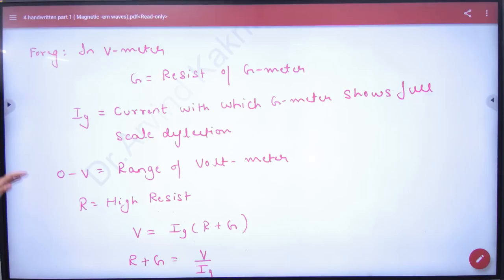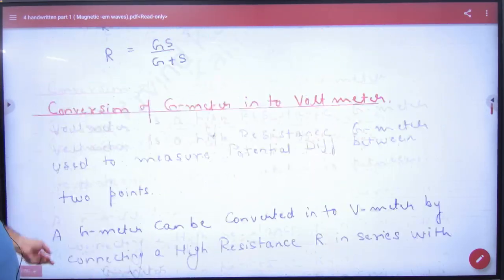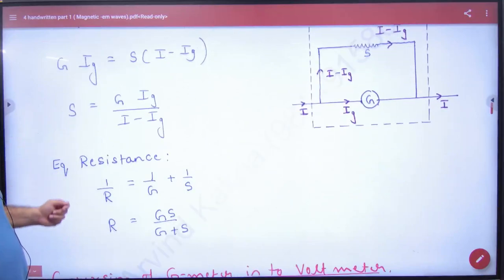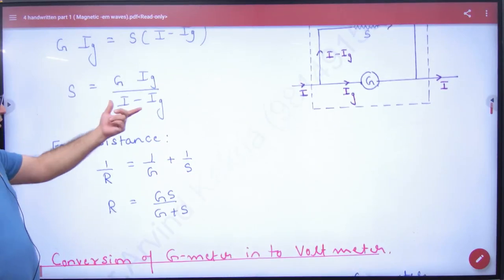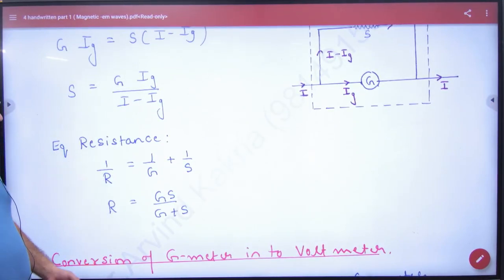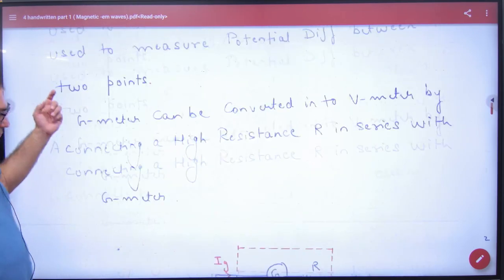For numericals, I have told the first formula for the ammeter (m meter). In the ammeter, the shunt formula is as noted in the register. And the equivalent resistance formula is also as given.